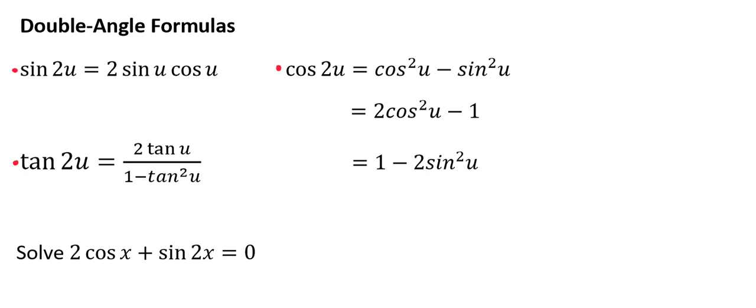In this video, we're going to use double-angle formulas to solve a multi-angle equation. We're going to solve 2 times the cosine of x plus the sine of 2x equals 0.